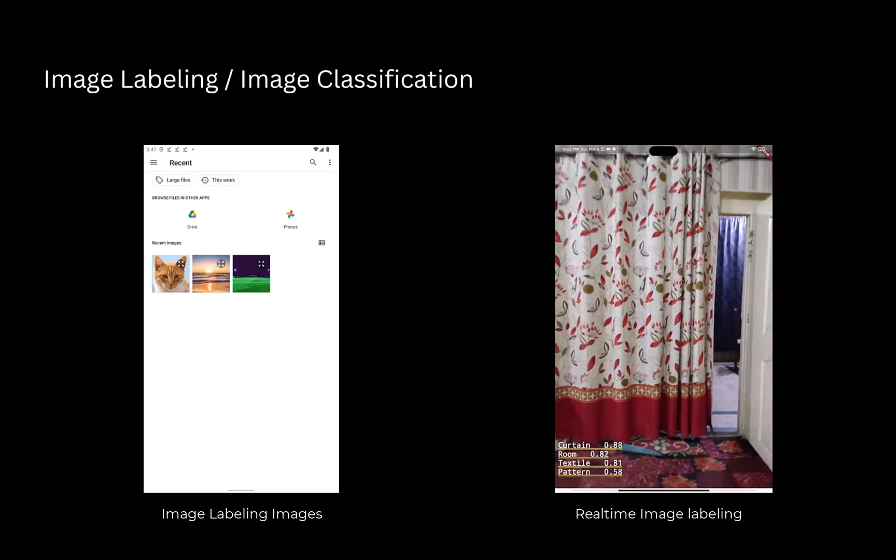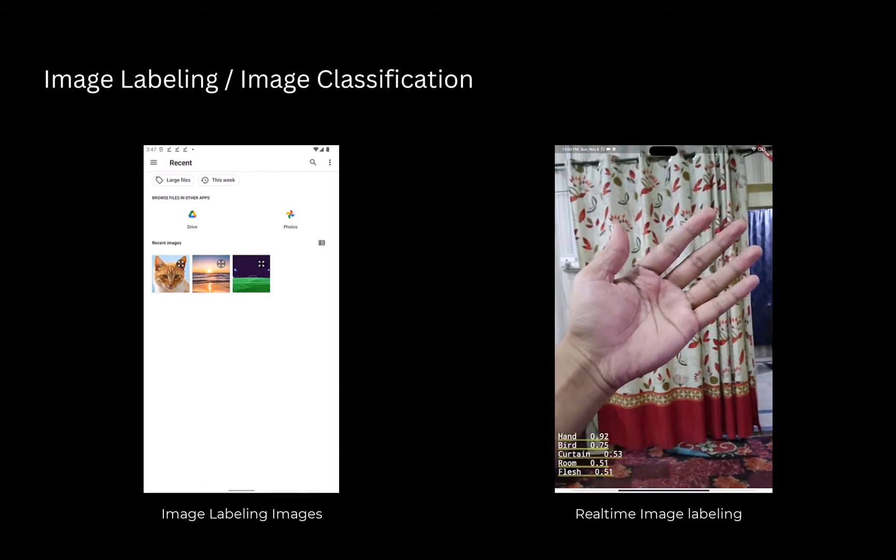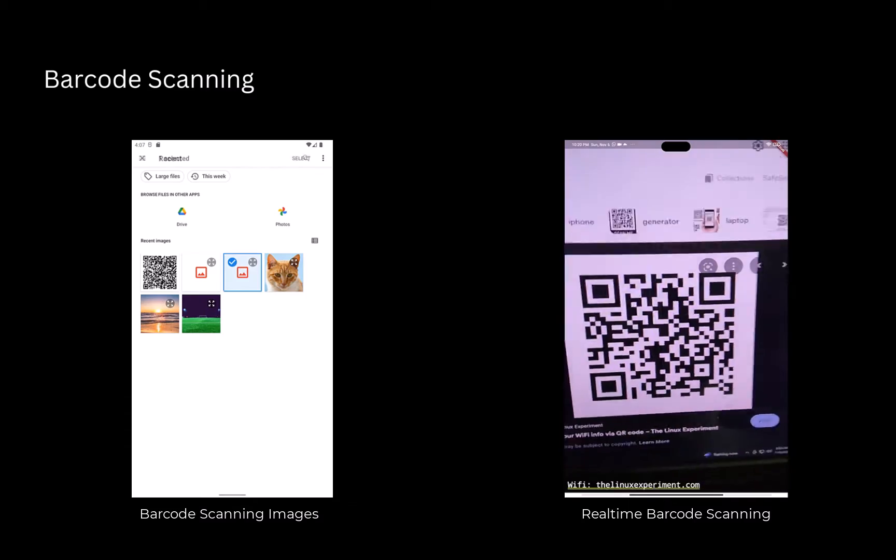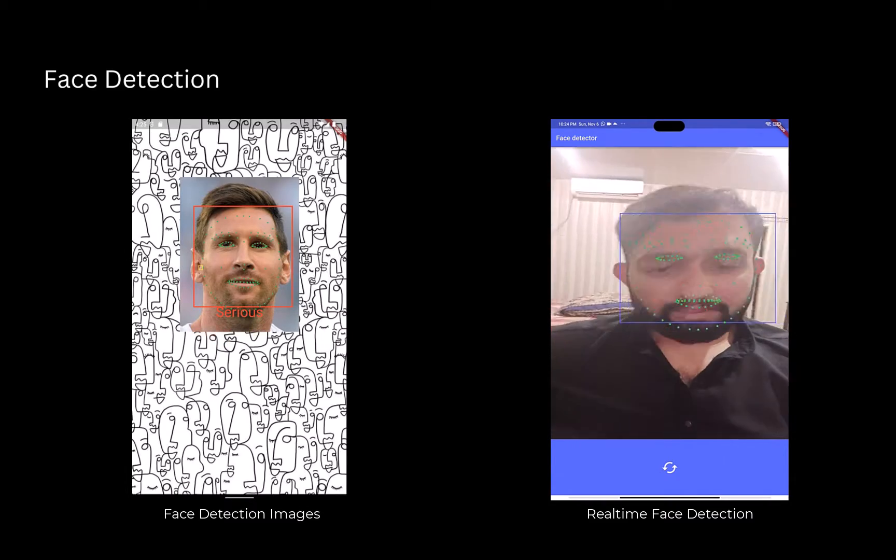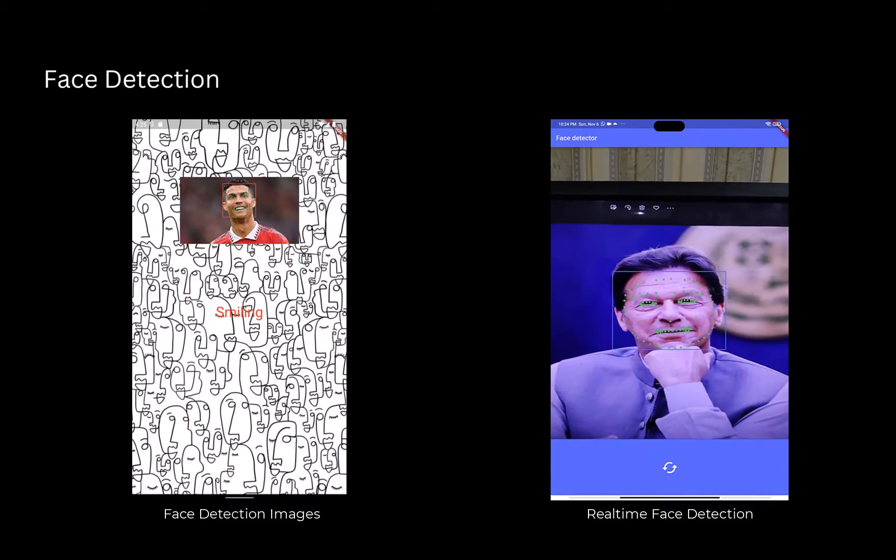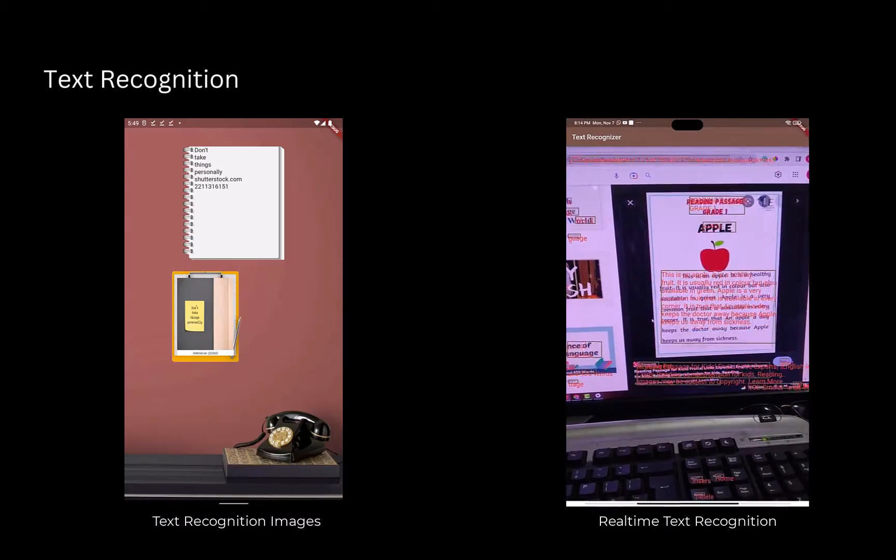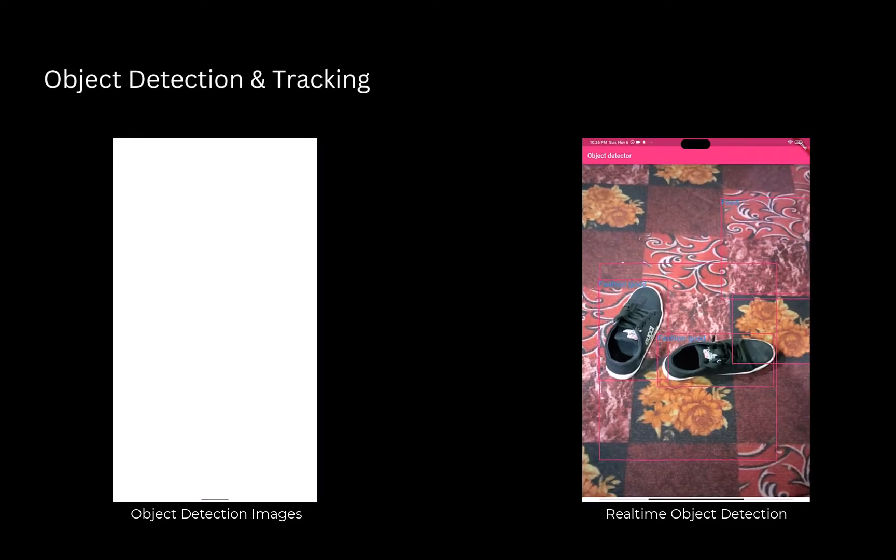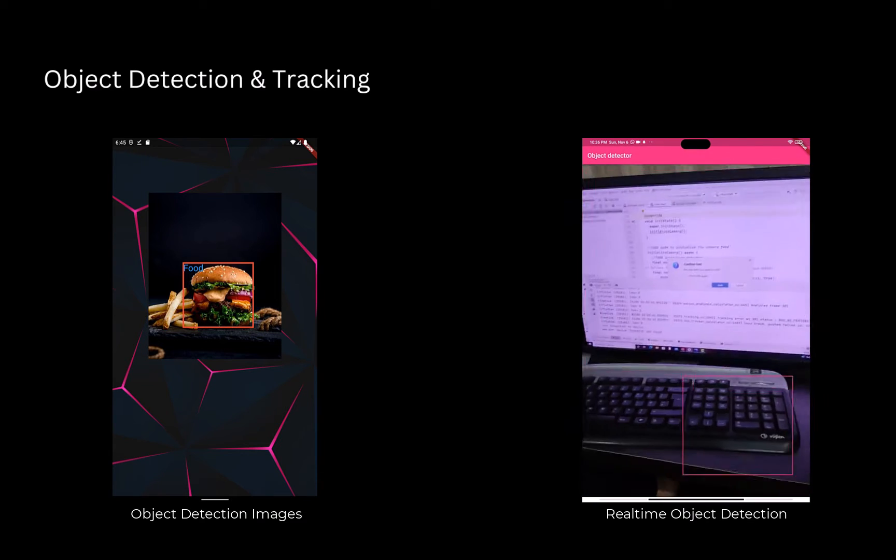We are going to build an image labeling application to classify things present in images or video, a barcode scanning application to scan barcodes and extract information from them, a face detection application to detect human faces, their facial landmarks, and their facial expressions, a text recognition application to recognize the text in images or videos, and an object detection application to detect and locate objects present in images or videos.